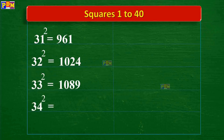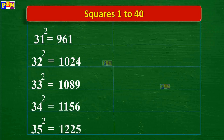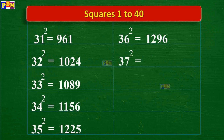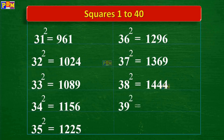34 squared is 1,156, 35 squared is 1,225, 36 squared is 1,296, 37 squared is 1,369, 38 squared is 1,444, 39 squared is 1,521, 40 squared is 1,600.